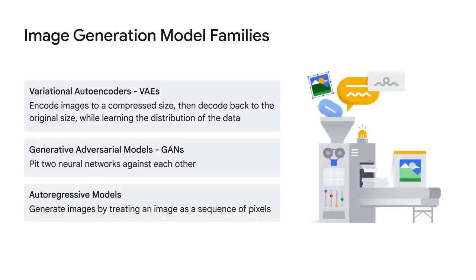While many approaches have been implemented for image generation, some of the more promising ones over time have been model families such as variational autoencoders, which encode images to a compressed size and then decode back to the original size while learning the distribution of the data itself. Generative adversarial models, or GANs, have also been quite popular.